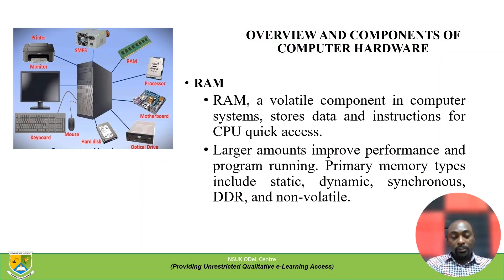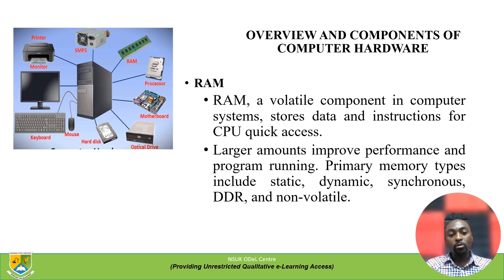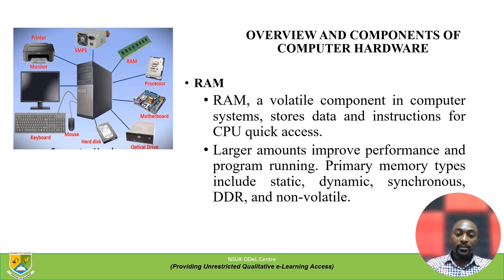Random Access Memory (RAM) is considered the main memory in the computer. It is a volatile component that stores data and instructions for the CPU's quick access. Larger amounts of RAM tend to improve performance and allow programs to run more efficiently. Primary memory types include Static RAM, Dynamic RAM, Synchronous RAM, Double Data Rate (DDR), and they also come in non-volatile forms.